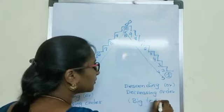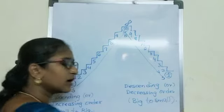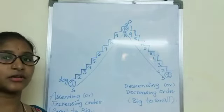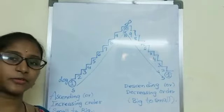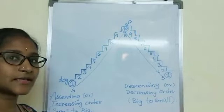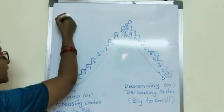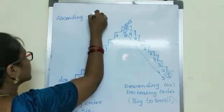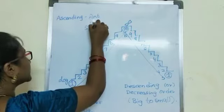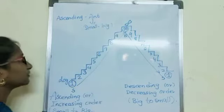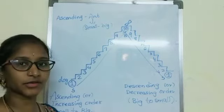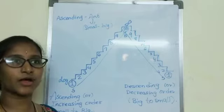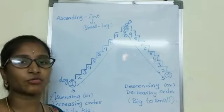Children, do you all know an ant? How will an ant be? It is a tiny creature. Yes, it is very small. So, small to big. When you are doing sums related to ascending order, you should remember ant. Ascending order means ant — ant is small, so I have to arrange numbers from small to big.